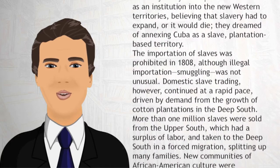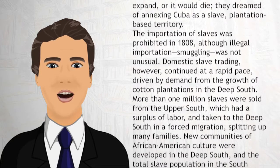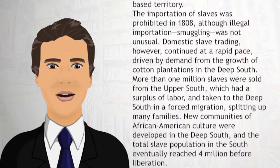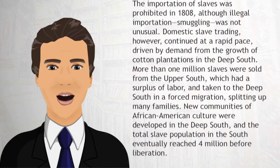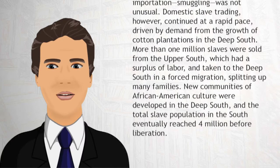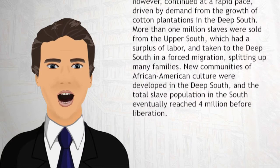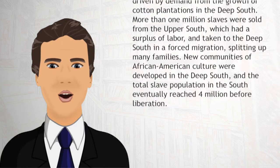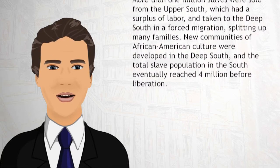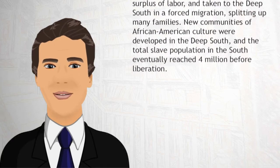The importation of slaves was prohibited in 1808, although illegal importation — smuggling — was not unusual. Domestic slave trading, however, continued at a rapid pace, driven by demand from the growth of cotton plantations in the Deep South. More than 1 million slaves were sold from the Upper South, which had a surplus of labor, and taken to the Deep South in a forced migration, splitting up many families.